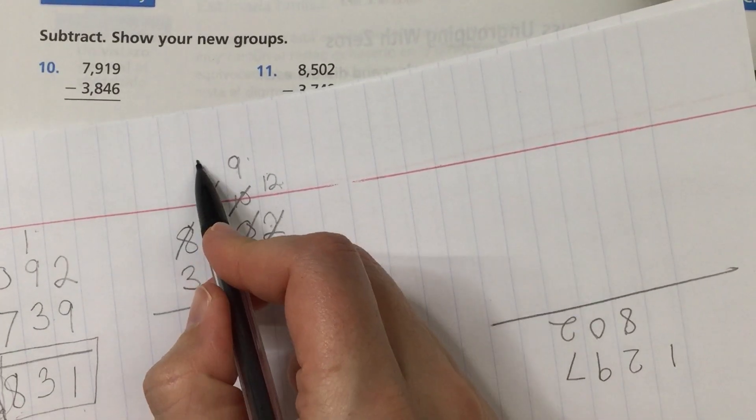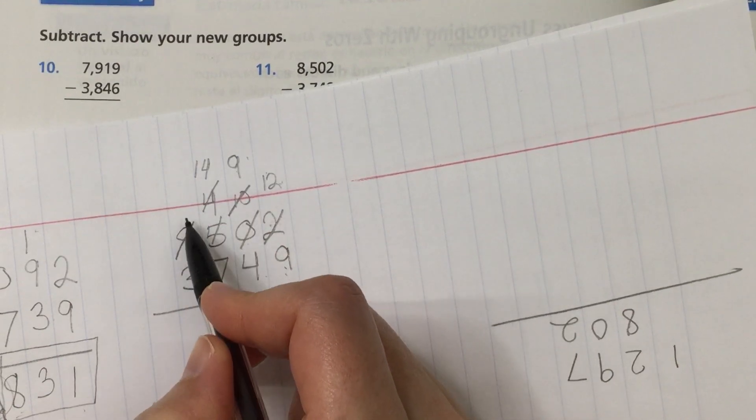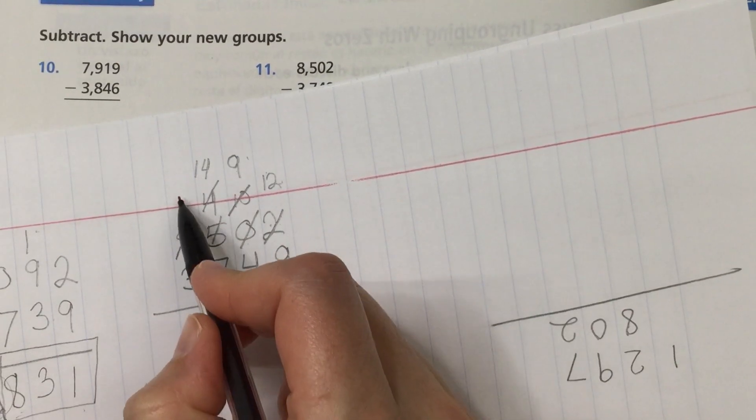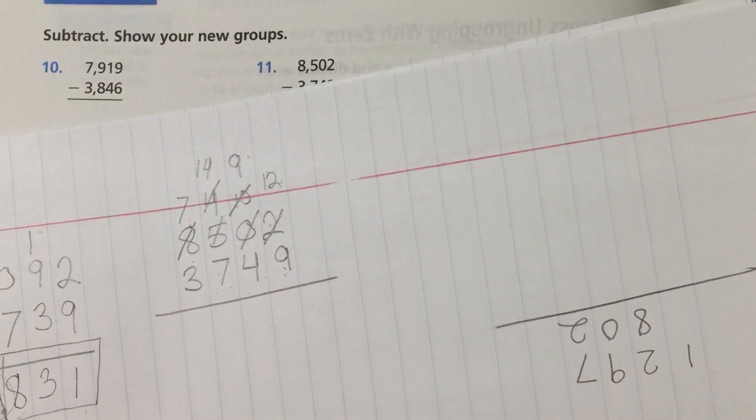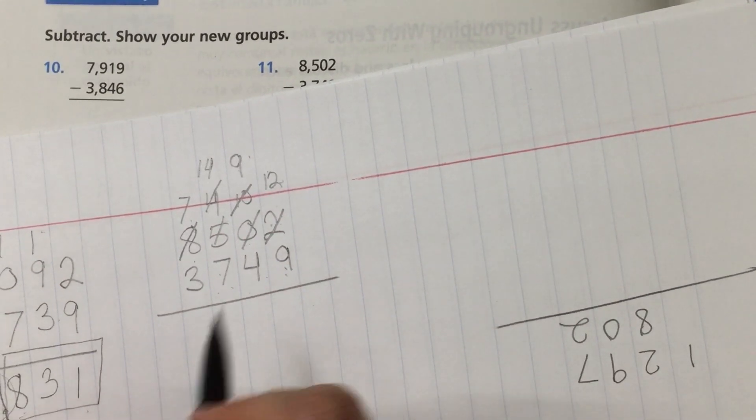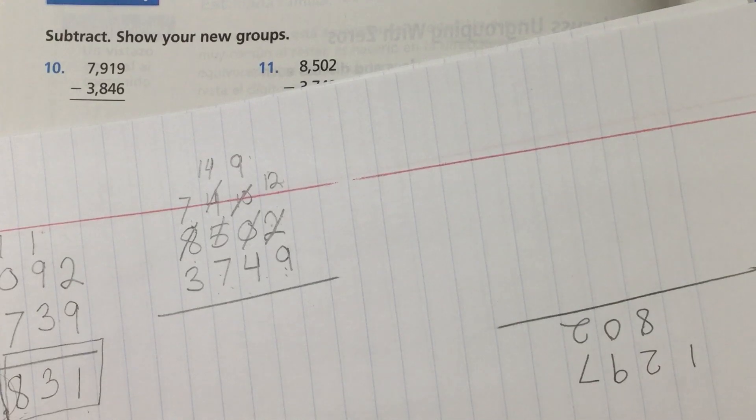Once again crossing out the 4, changing it to a 14 because we're going over to the thousands place and taking one away. Changing the 8 to a 7. So now you can see that there's a lot more space when I have them lined up this way on my lined paper.